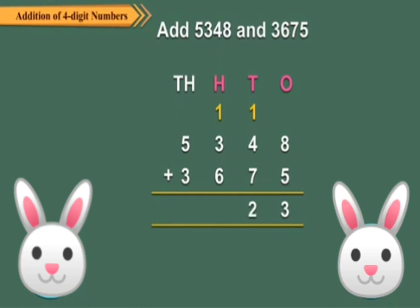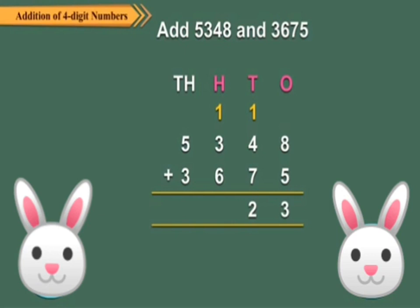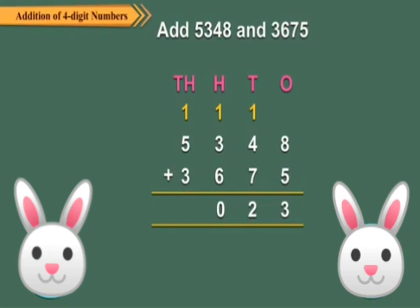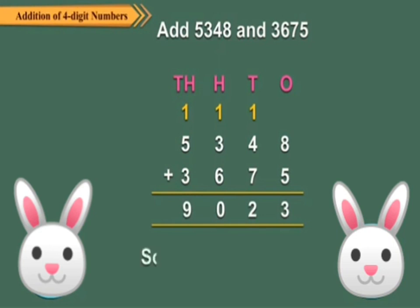Step 3: Add the hundreds. 3 hundreds plus 6 hundreds plus the 100 carried over from the tens column equals 10 hundreds, which is 1000 and 0 hundreds. Carry over 1000 to the thousands column and write 0 in the hundreds column. Step 4: Add the thousands. 5 thousands plus 3 thousands plus the 1000 carried over equals 9 thousands. Write 9 in the thousands column. So, 5348 plus 3675 equals 9023.